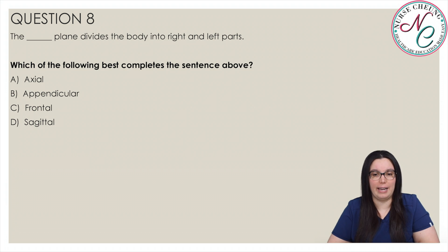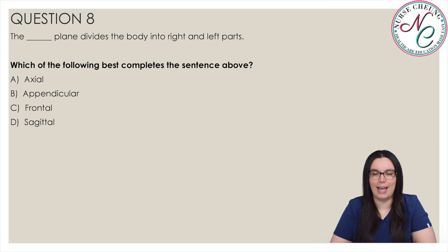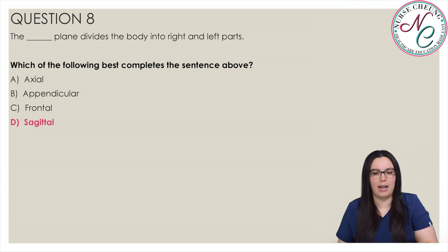The blank plane divides the body into right and left parts — which of the following best completes the sentence? Is it A, axial; B, appendicular; C, frontal; or D, sagittal? The correct answer is D, sagittal. The axial portion consists of the head, neck, and torso; the appendicular portion consists of the limbs; and the frontal plane divides the body into anterior and posterior parts.